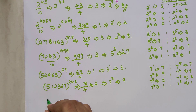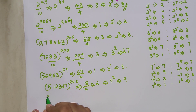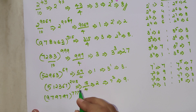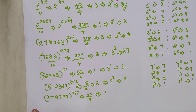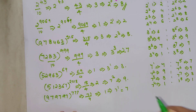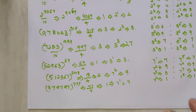Let's take another: 979797 raised to 777. Divide 77 by 4; the remainder is 1. So my final answer is 7 raised to 1, which is just 7.